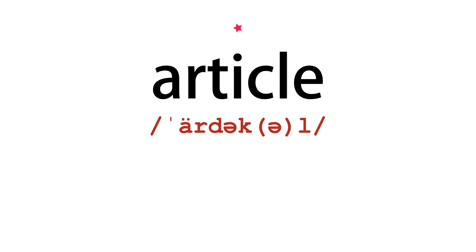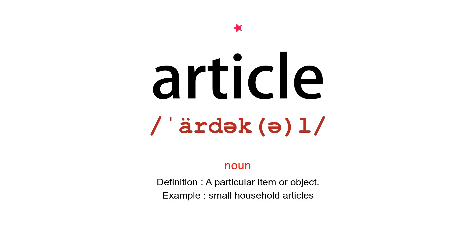Article. Noun – Definition: a particular item or object. Example: small household articles.